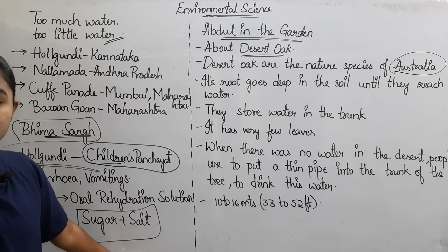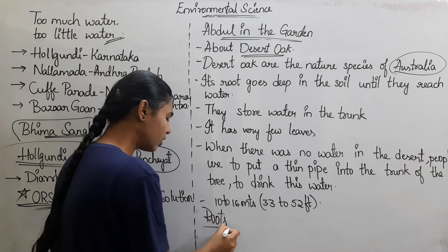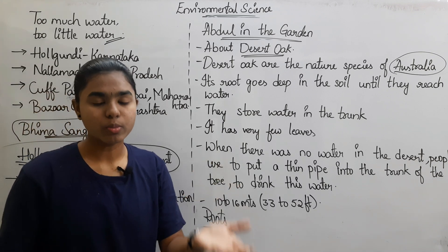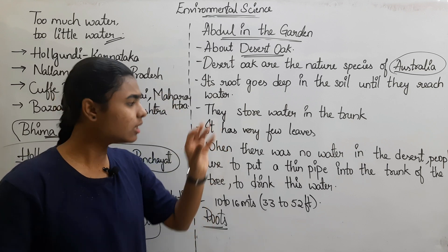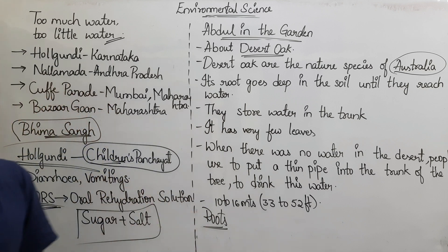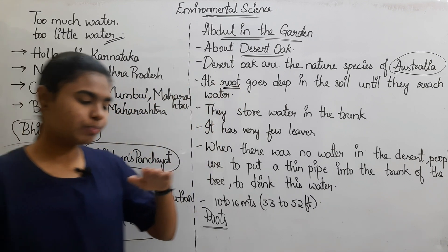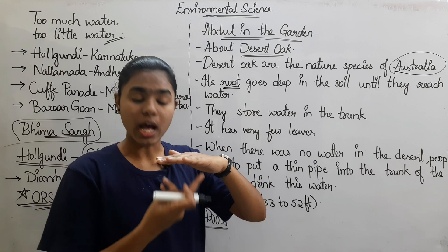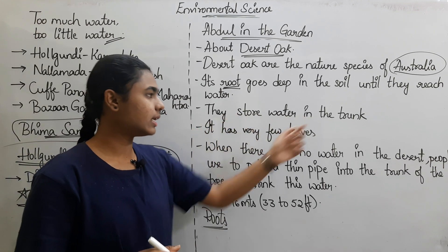Now we will discuss the functions of the Desert Oak plant and its roots. The roots go very deep into the ground — the tree is living in the desert and the roots reach deep underground. They store water in the trunk.